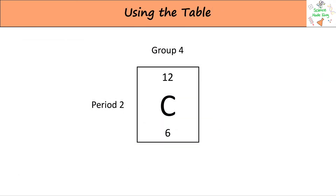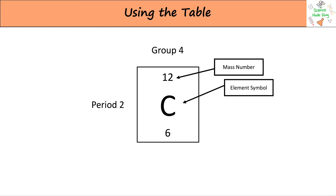We can use the Periodic Table to find out lots about an element's atom. The big number is the mass number — this tells us how heavy the atom is. The letter is the element symbol, and the little number is the atomic number, which tells us how many protons and electrons the atom has.